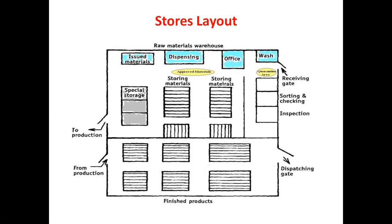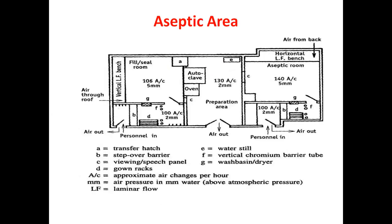From the stores, materials go to production, then after production to the finished product stage, then to the dispensing gate. The aseptic area is also described. An aseptic room should have 140 AC 5mm laminar airflow — both horizontal and vertical LAFU specifications.